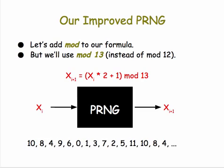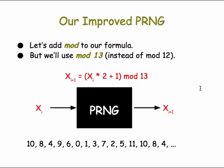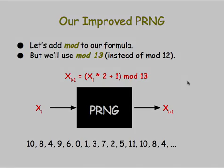If we take 4 as our input, we get 9, then 6, then 0. You can do the arithmetic and you'll see that this PRNG using this formula will generate this sequence of numbers. To make sure we understand how our new formula works, let's pause here and look at a couple of quick quiz questions. When we resume, we'll take a closer look at the sequence of numbers that this PRNG generates.